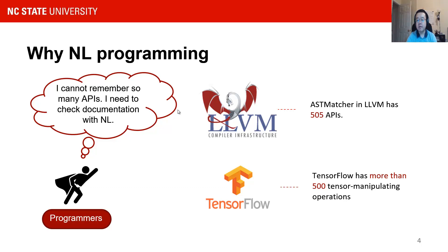For example, the estimator in LLBM has 505 APIs, and TensorFlow has more than 500 tensor manipulation operations. For programmers, it will take a while for them to adopt these new languages. And even after they get familiar with these languages, they still need to refer to the document to check the details. When they search inside the document, they still use natural language to describe their needs. Therefore, natural language programming can help them pick the APIs and relieve the burden of memorizing many APIs with details.